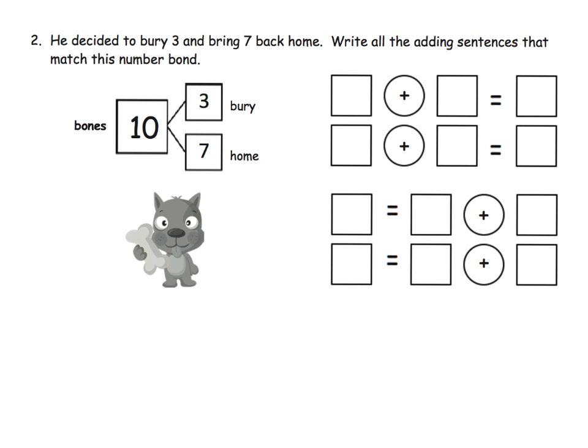Now, Rex decided to bury three and bring back seven into his house. So write all the adding sentences that match this number bond. We've got this beautiful little number bond here. We have ten bones total. Three of them he buried, seven of them he is bringing to his house. So what are all the equations? Three plus seven equals ten. Seven plus three equals ten.